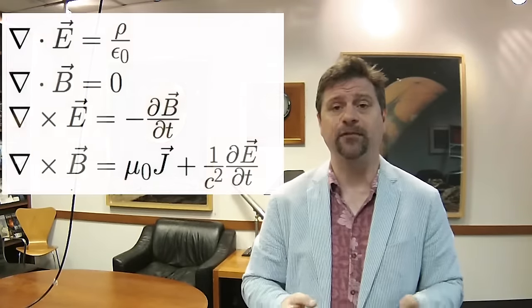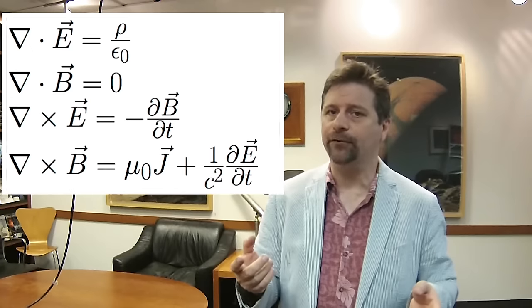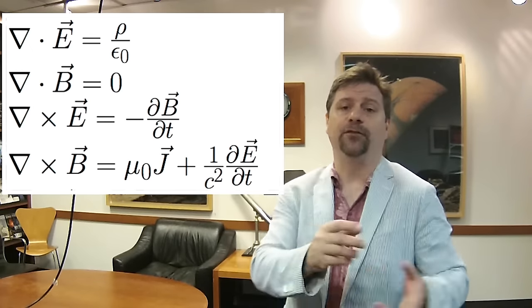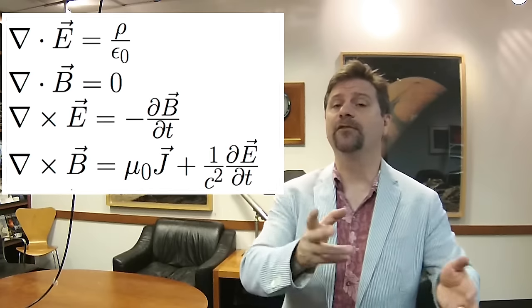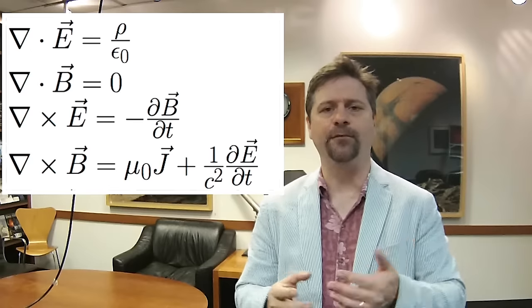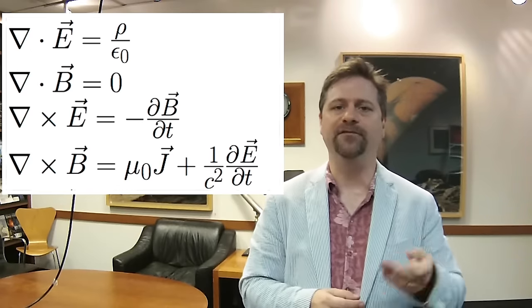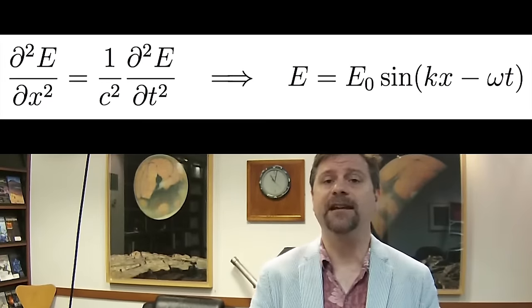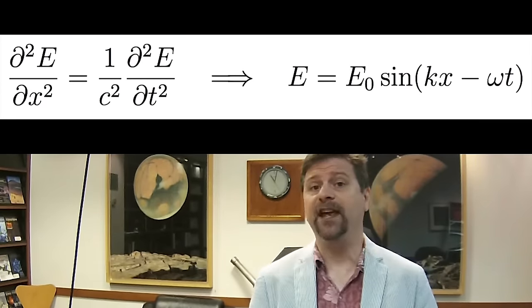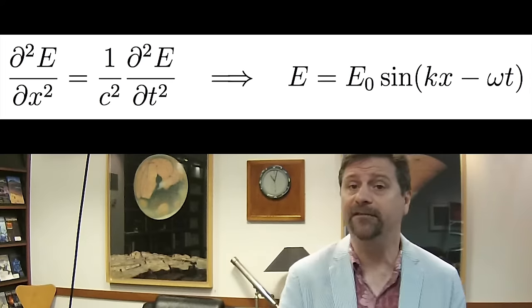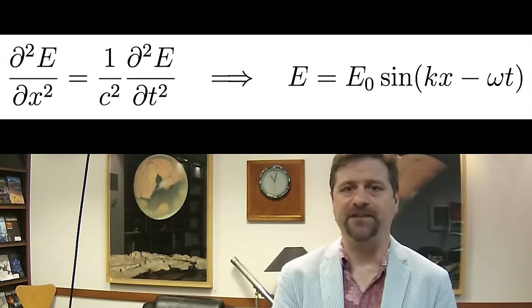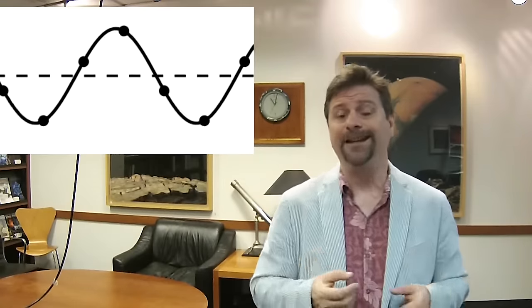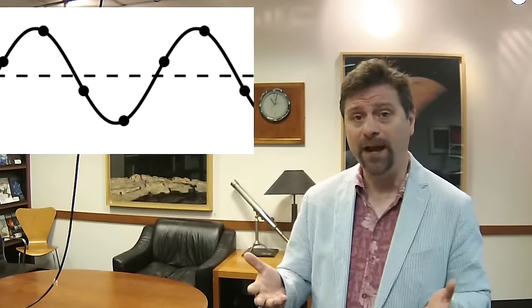Maxwell's laws of electromagnetism were experimentally derived — not from first principles. One of the important outcomes is that there are solutions to the equations that look like waves, and those waves have the propagation speed of the speed of light. So Maxwell said those are the speed of light — light is simply the propagation of an electromagnetic wave.